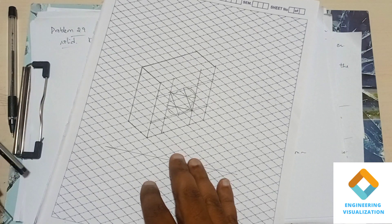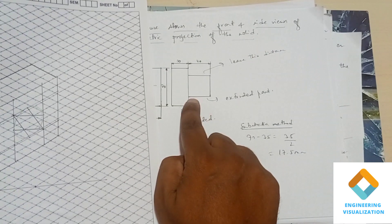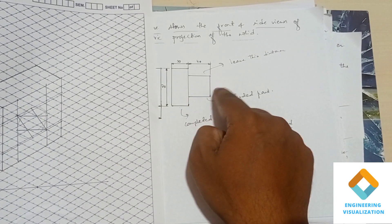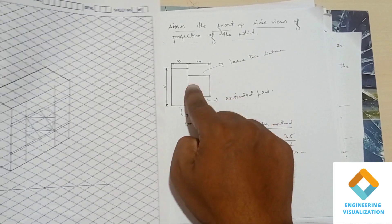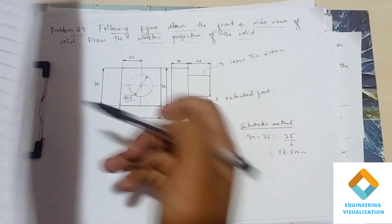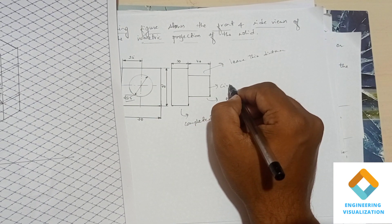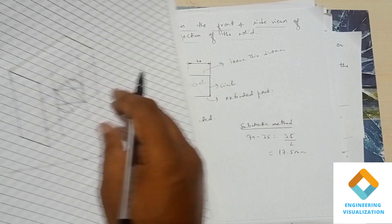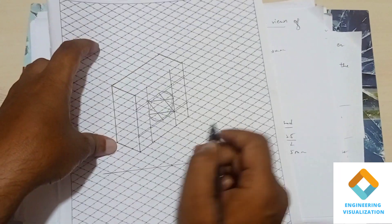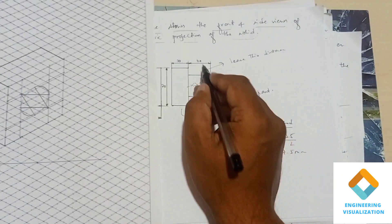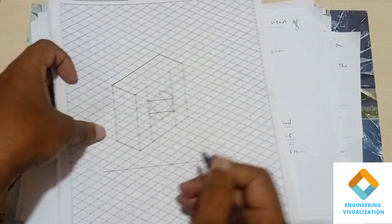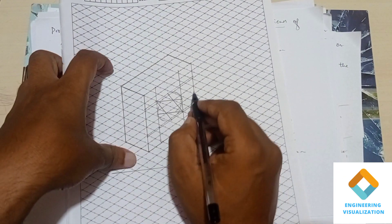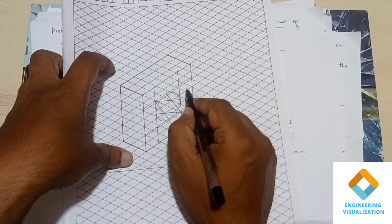The ellipse is done. Now we have to construct another ellipse at a distance of 40mm — that is four boxes — from the reference point. You can see there is one circle on each face; when constructed in isometric they become ellipses. We have to extrude that one at a distance of 40mm, so four boxes are considered.